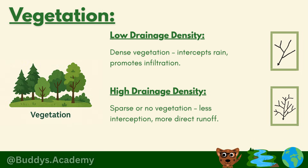In terms of vegetation: for low drainage density you need dense vegetation — lots of plants, grass, and trees. Interception happens where leaves catch the rain, slowing the water down so it drops gently onto the soil, giving it more time to soak in and promoting infiltration. For high drainage density you need sparse or no vegetation — there are no plants to stop or slow the rain, so when water hits the ground hard and fast it causes more surface runoff.